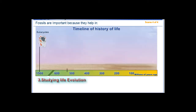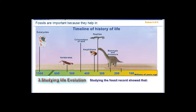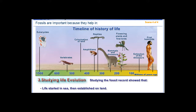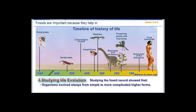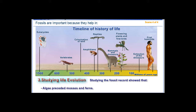3. Studying Life Evolution. Studying the fossil record showed that life started in the sea, then established on land. Organisms evolved always from simple to more complicated, higher forms.